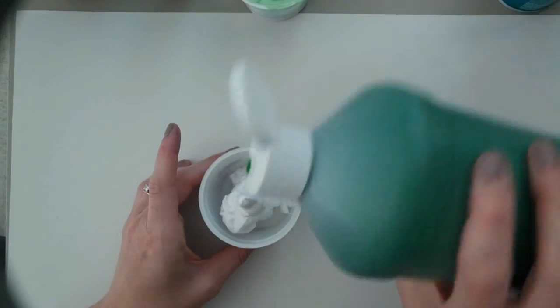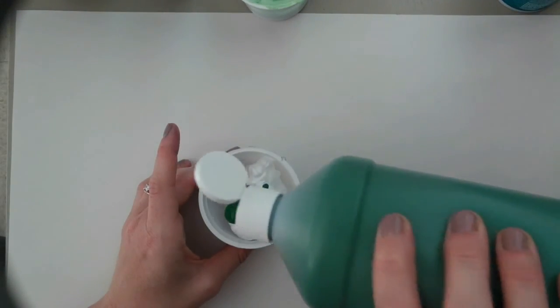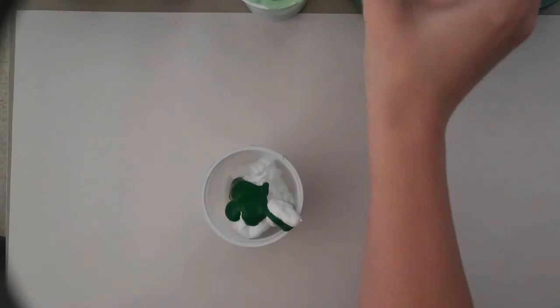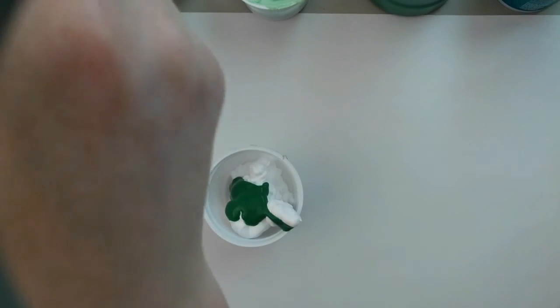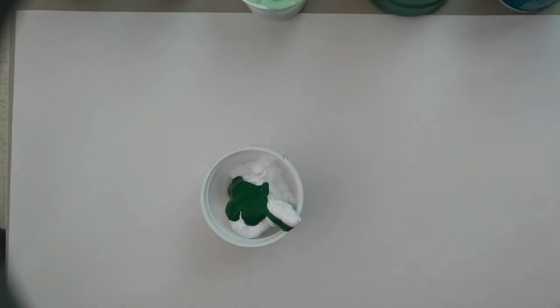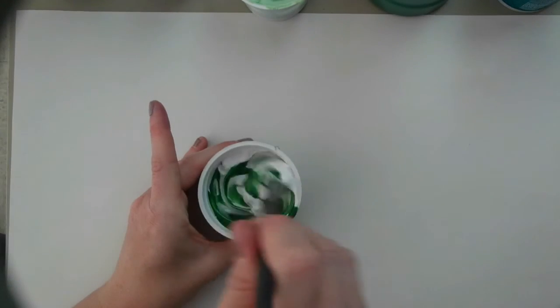Then you pour in a color that you'd like to add to the painting you're going to do, and simply use a paintbrush to mix it all up into what will become puffy paint.